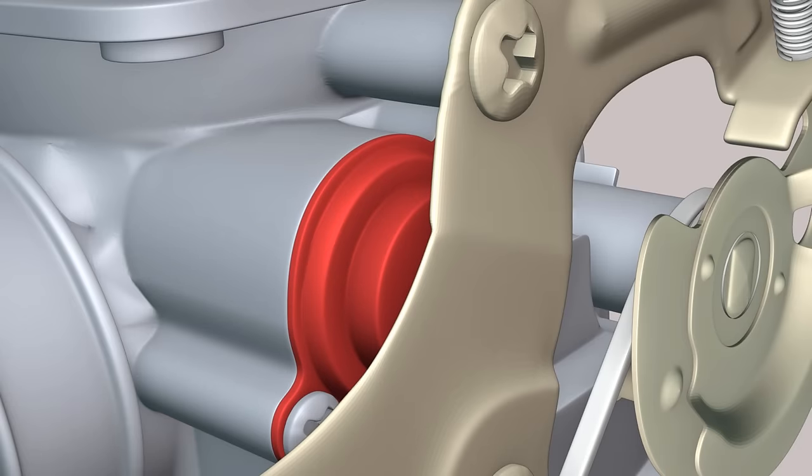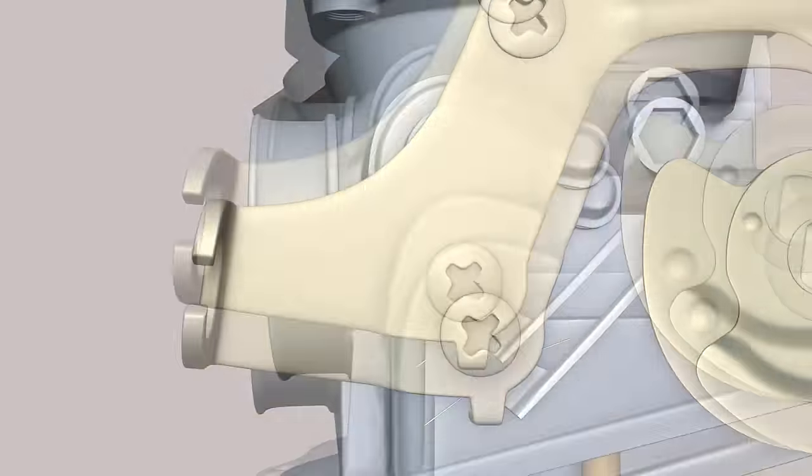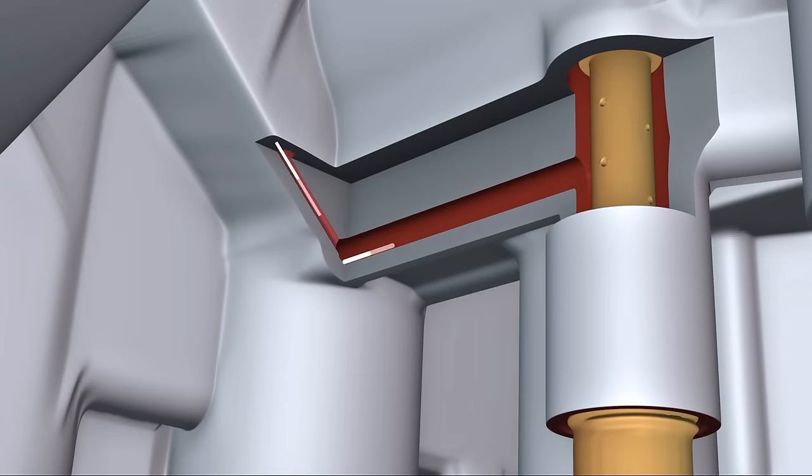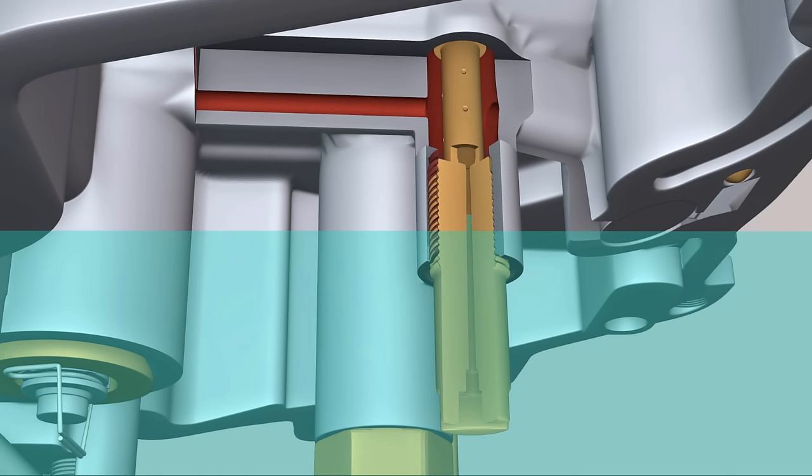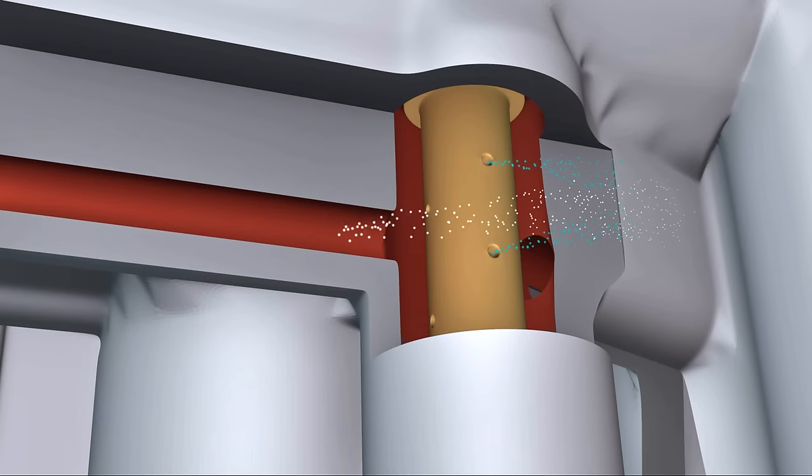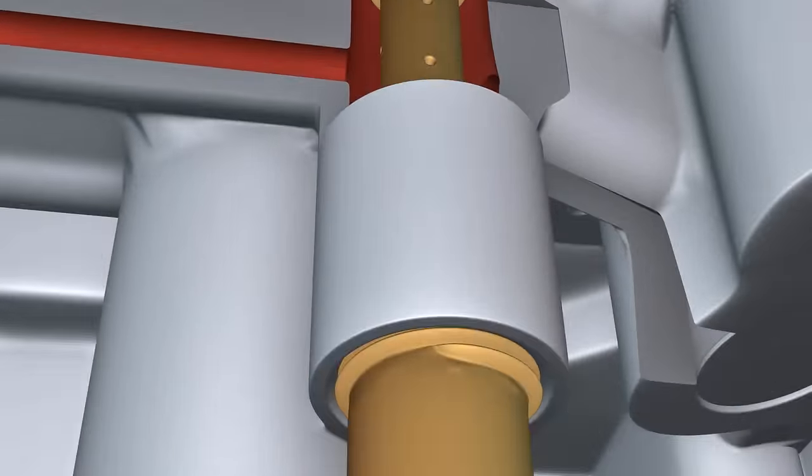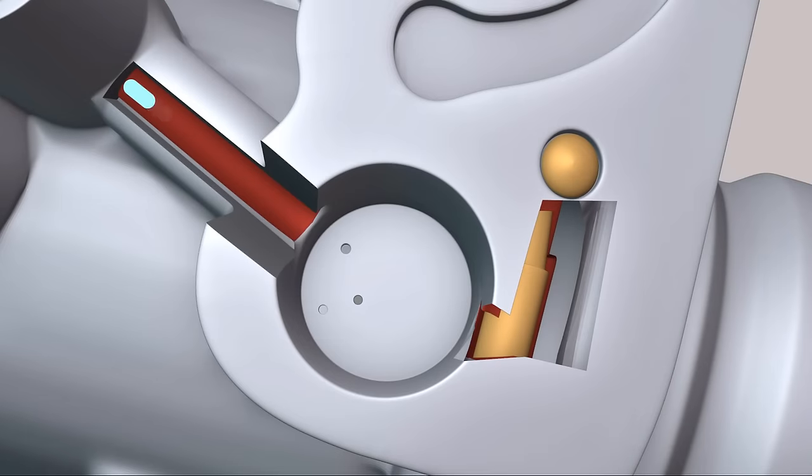It originates in the diaphragm chamber and passes through the air shut-off valve. This valve is open most of the time. The air from these two channels is then directed to the emulsion tube of the idle speed nozzle. Fuel from the float chamber also rises here under the action of atmospheric pressure through the idle speed nozzle. Here the fuel is mixed with air and the mixture is directed to the exhaust ducts.